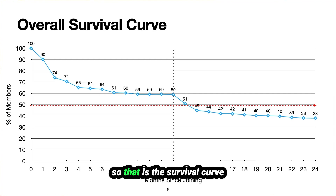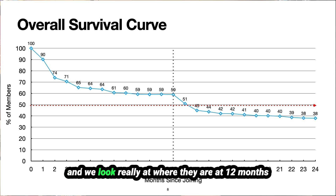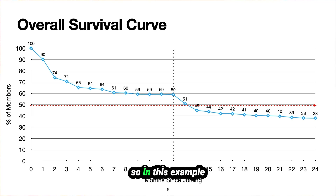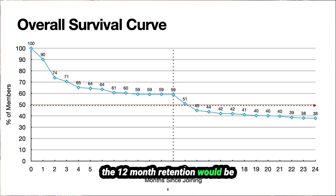That is the survival curve, and we track that and look at where members are at 12 months. In this example, the 12-month retention would be 59 people, or 59% of the membership.